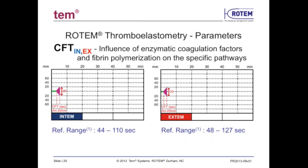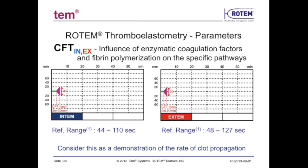The clot formation time is developed by measuring the time it takes from the end of CT formation at 2 mm to reach an amplitude measurement of 20 mm of clot strength. Consider this as a demonstration of the rate of clot propagation.